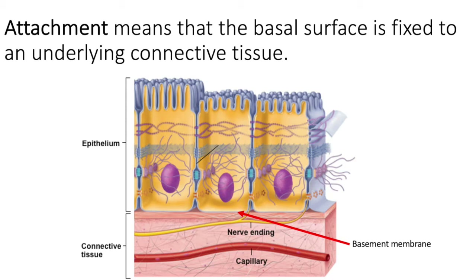The characteristic of attachment means that the underlying basal surface interfaces with the underlying connective tissue. A basement membrane is this intricate interlacing between the epithelial tissue layer and the connective tissue layer — the fibers sort of cross-link so that the epithelial tissue doesn't slide across the connective tissue. It's fixed, it's firm, and it's not going to move.